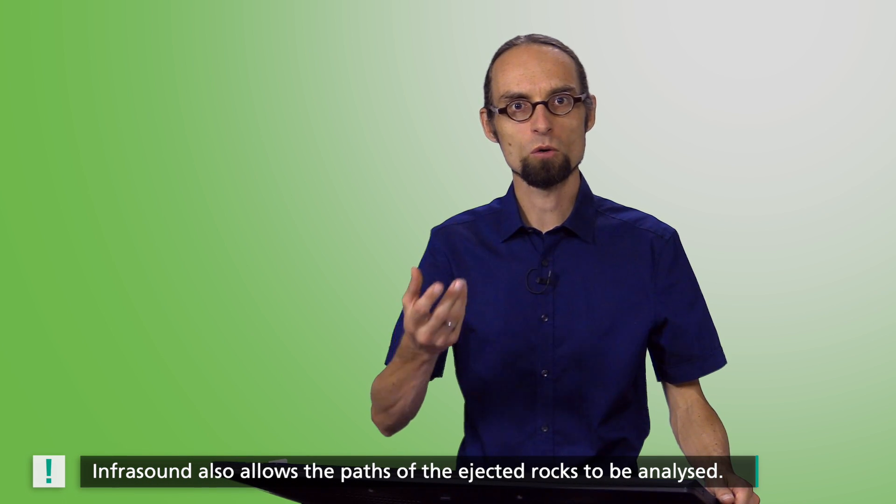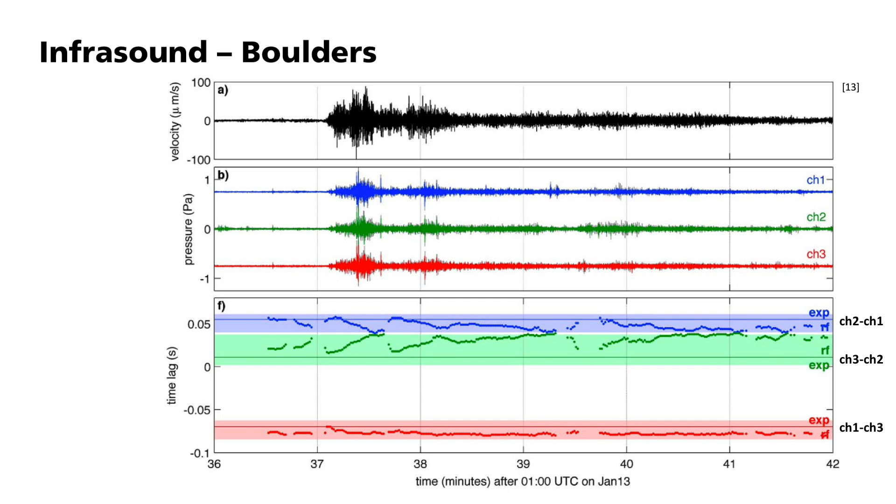This is how seismic signals and infrasound could be used to localize the volcanic activity. In addition, infrasound also allows the path of the ejected rocks to be analyzed. You can see this here.